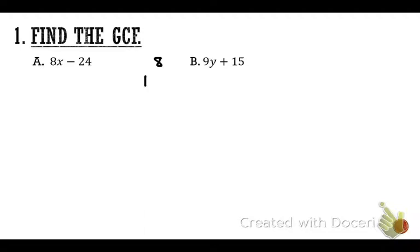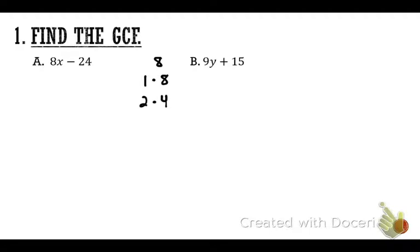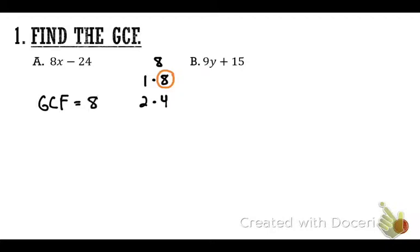We know 1 can go into 8: 1 times 8. Can 2 fit into 8? Yes — 2 times 4. Can 3 go into 8? No. How about 4? Yes, but we already have a 4, so we're done. Now step three: start with the largest factor, 8. Can 8 go into 24? Yes — so that's our GCF. Circle it and write GCF equals 8.